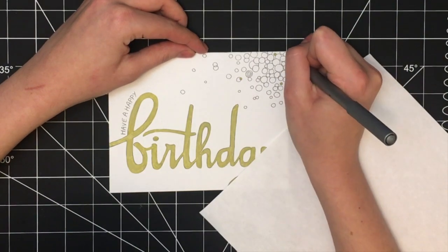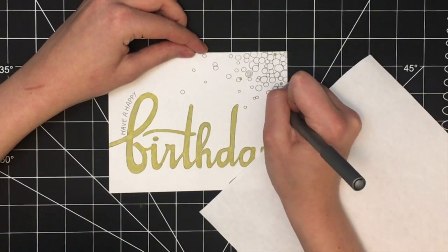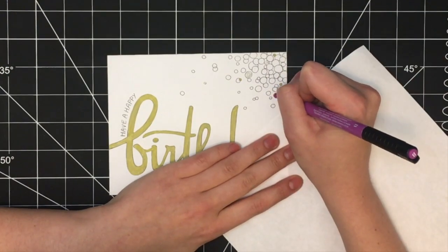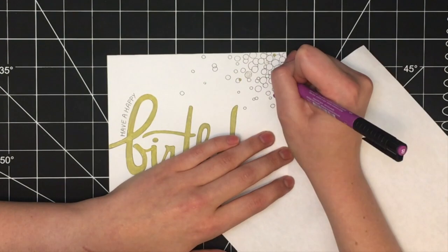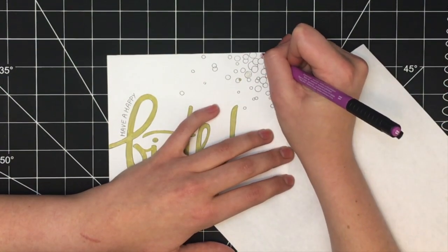Next I used various colors, so silver, gold, some different colors of purple that you saw in the beginning, to fill in these little confetti dots that I had drawn out previously.